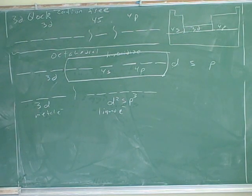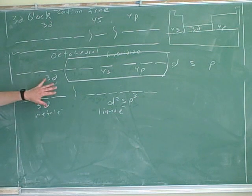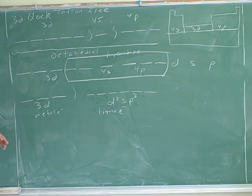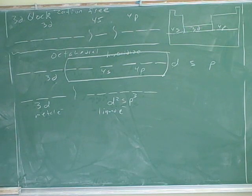That's the octahedral model. This is just completely different from crystal field theory. In crystal field theory, we weren't hybridizing the d orbitals — we just had five unhybridized d orbitals, and in that theory all those unhybridized d orbitals got the lone pairs. These are just two different models that are useful in different situations.